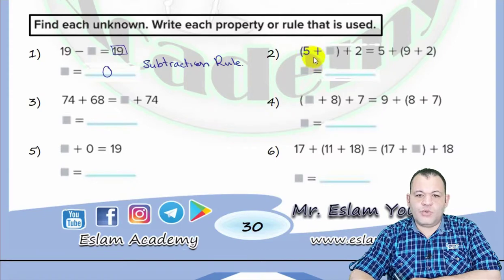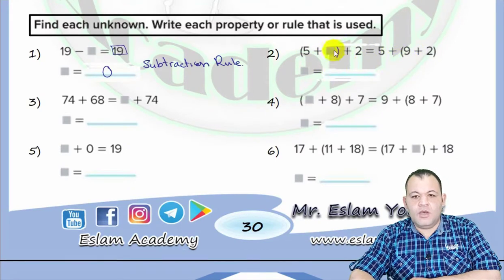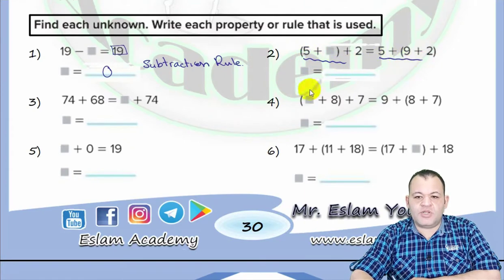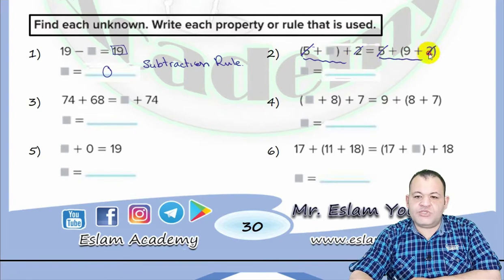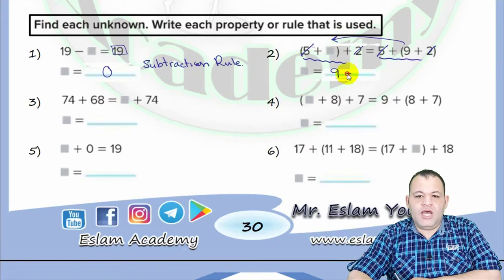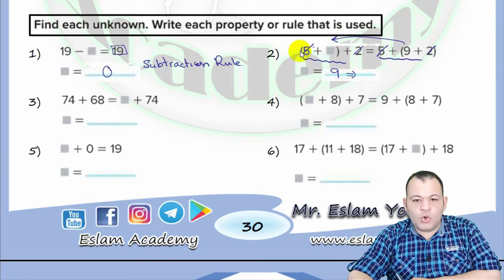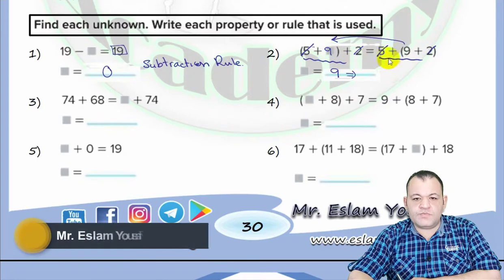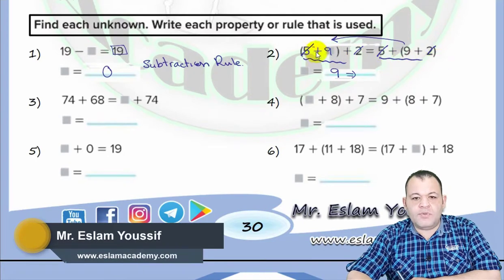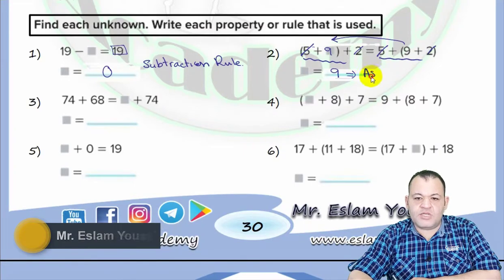In question number two, we have 5 plus unknown plus 2 equals 5 plus 9 plus 2. Because they are equal, the number on the left must match the number on the right. We have 5 and 5, and 2 and 2, so the only missing number is 9. The unknown equals 9. Since we keep the same order — 5, 9, 2 on both sides — but the numbers inside the brackets are different, this is defined by the associative property.